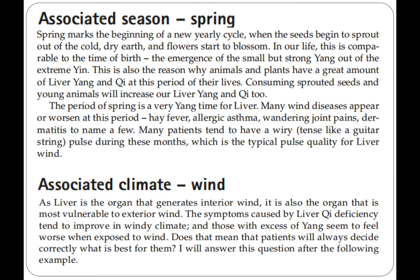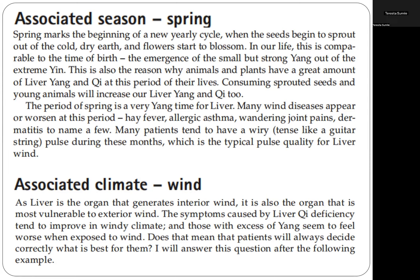The associated climate of the wood element is wind. As the liver is the organ that generates interior wind, it is also the organ most vulnerable to exterior wind. The symptoms caused by liver qi deficiency tend to improve in windy conditions, while those with excess yang seem to feel worse when exposed to wind. This raises the question: do patients always decide correctly what is best for them?